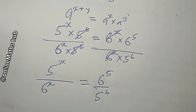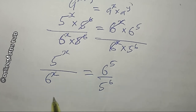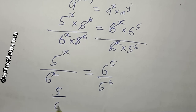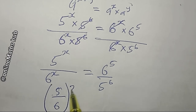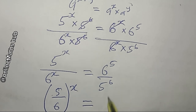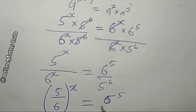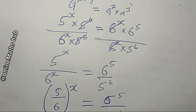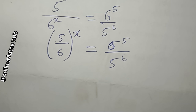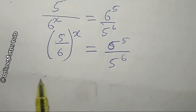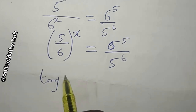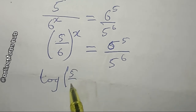Since x is common on the left hand side, I can write this as 5 divided by 6, all to the power x. Next, I'm going to take the log of both sides so I can bring down the exponent x. Taking log of both sides gives: log of (5/6) to the power x is equal to log of (6 power 5 divided by 5 power 6).